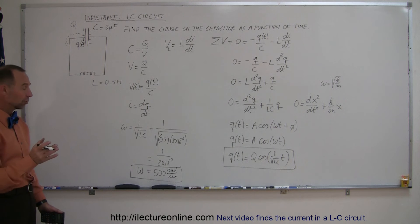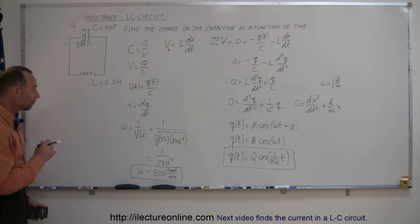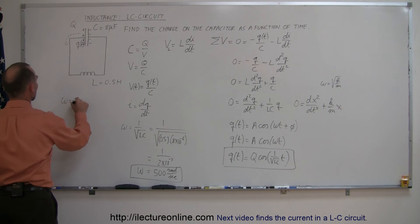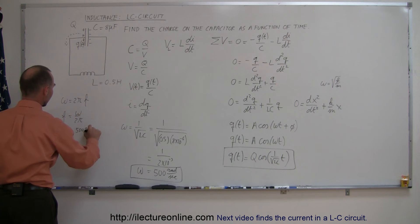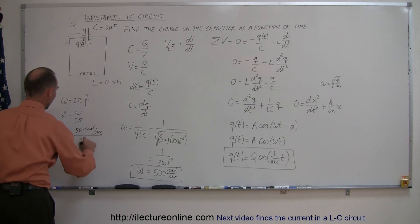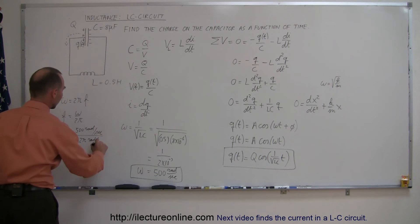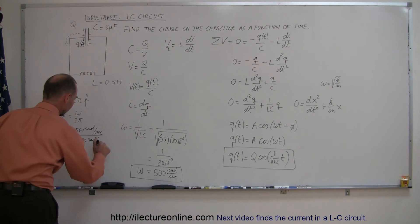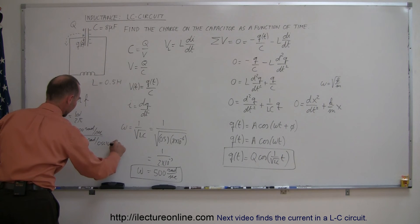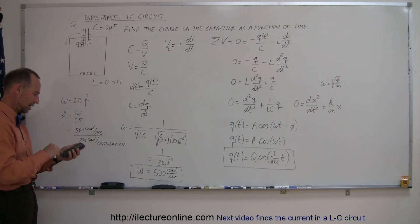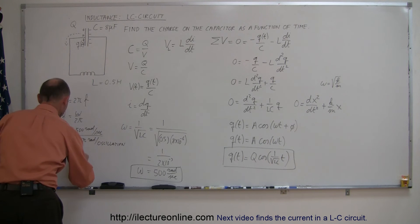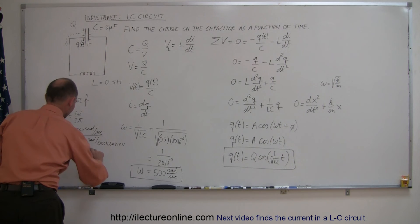Remember that the relationship between radians per second and frequency is: omega equals 2π f, which means frequency equals omega divided by 2π. In this case omega was 500 radians per second, divided by 2π radians per oscillation, which gives approximately 80 oscillations per second.